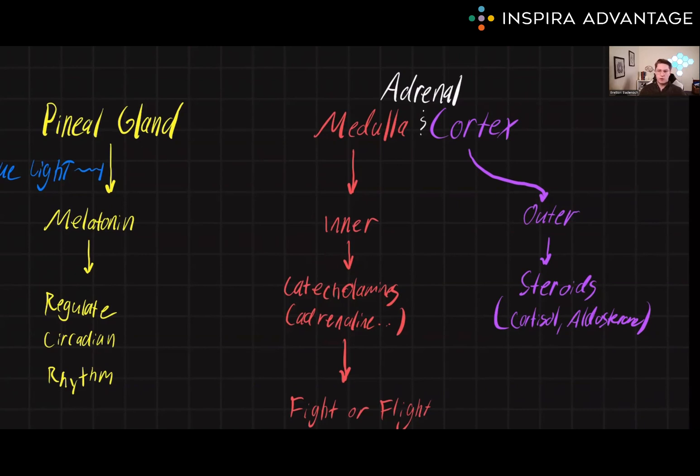The adrenal cortex is the outer part of the gland and produces steroid hormones, such as cortisol and aldosterone. Both of these help to regulate the body's metabolism and fluid balance.